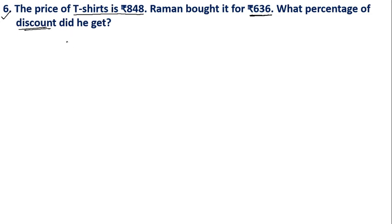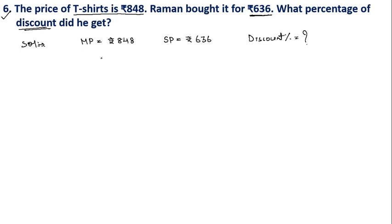We have to calculate the discount percentage. Given: Marked Price = ₹848 and Selling Price = ₹636. To find discount percent, we first need to find the discount amount received on this T-shirt.